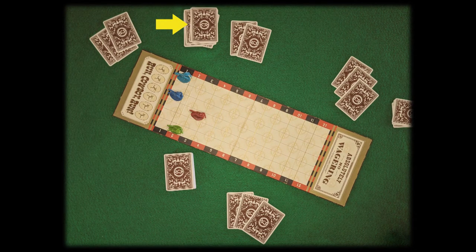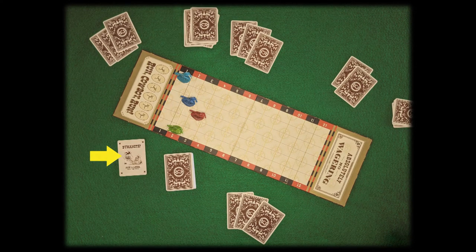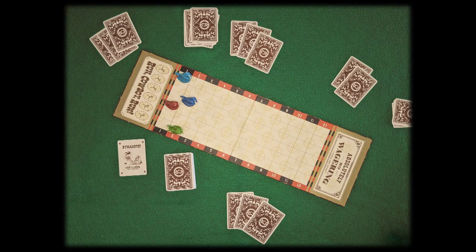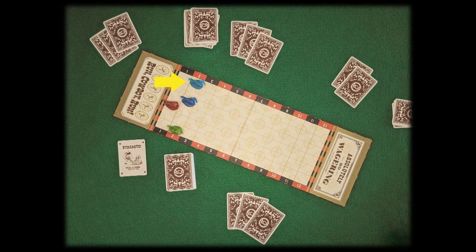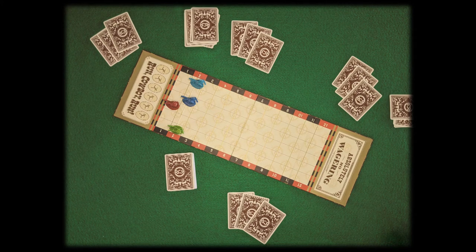Player number three now plays her second hazard card, moving player number one back two spaces, moves her cowboy one space, and takes the trick, which in this case is only her discarded hazard card.